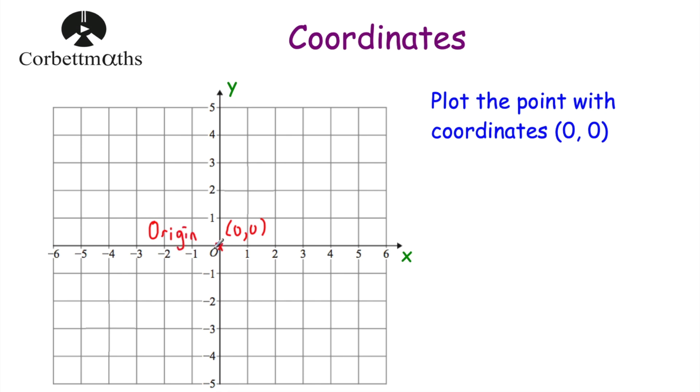That's a very important point — the point (0, 0) — and it has a special name: the origin. So we've plotted the point with coordinates (0, 0).